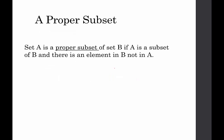Okay, so we talked about just a regular subset, but we also have the idea of a proper subset. A proper subset of another set, so set A is a proper subset of set B if A is a subset of B, and there is an element in B that's not in A. So that means that sets that are equal are not proper subsets of each other, because we need B to have something that A doesn't have.